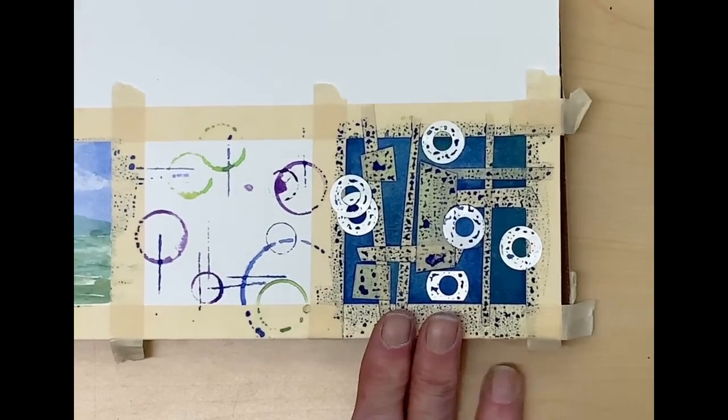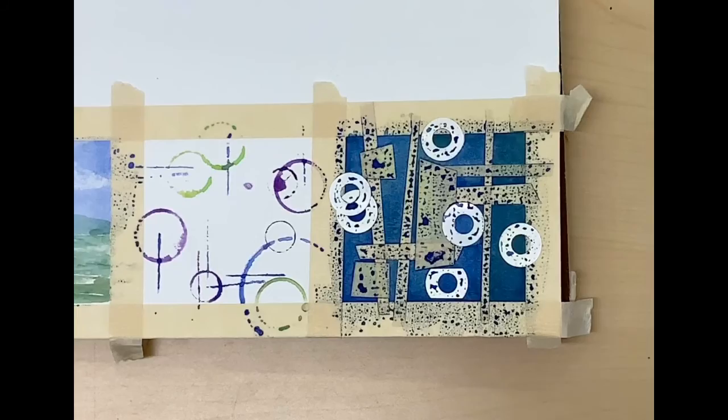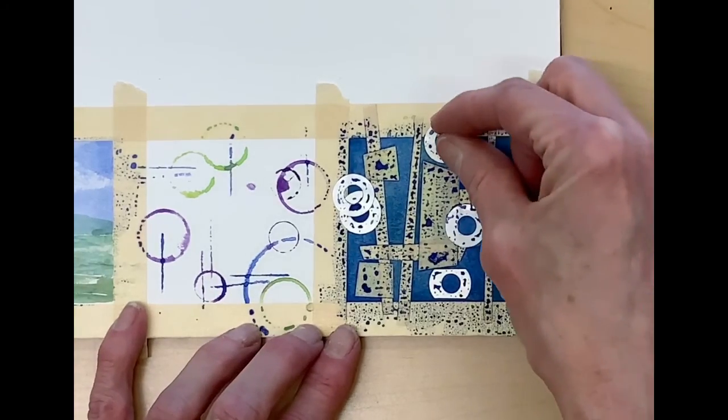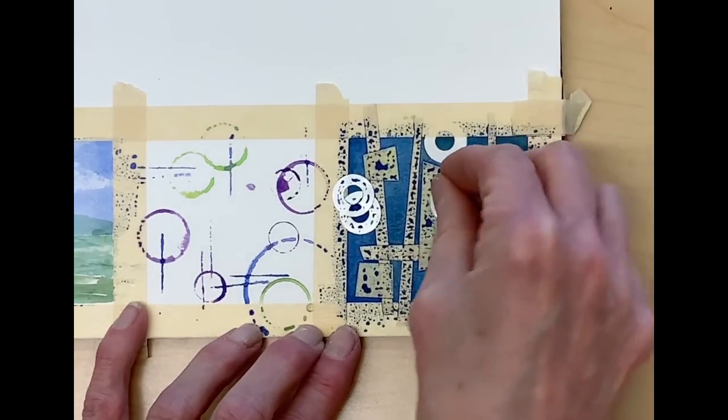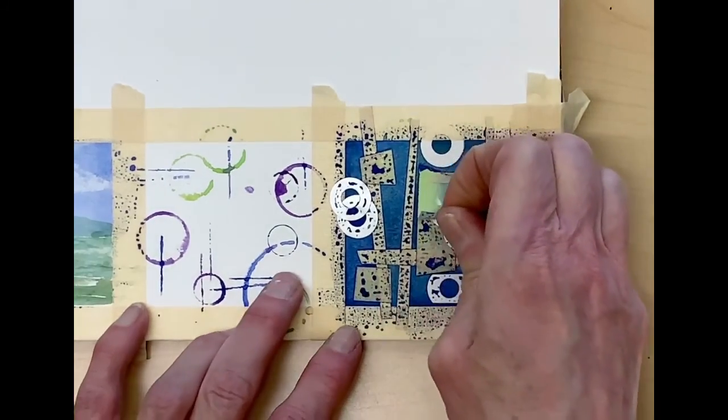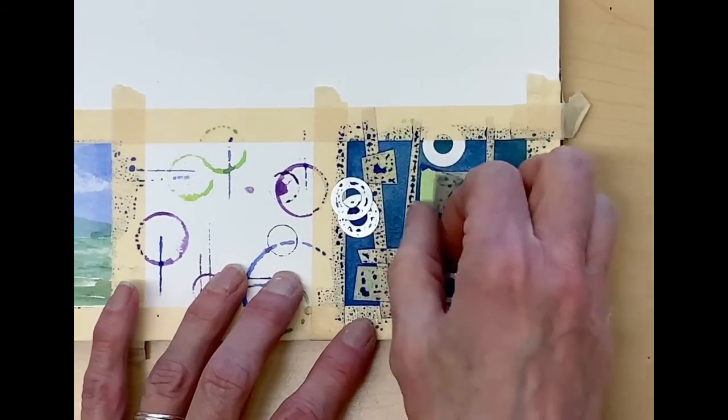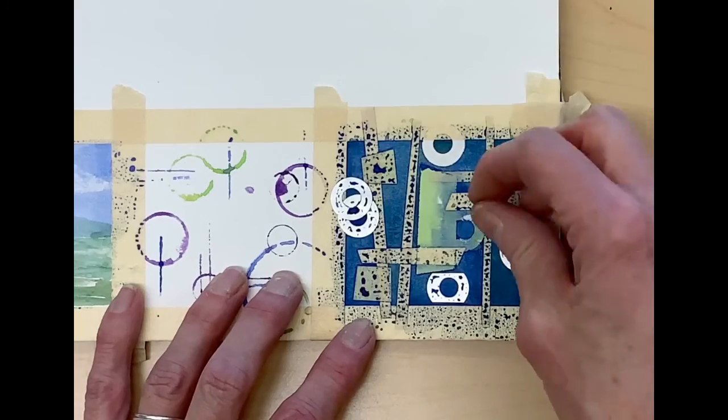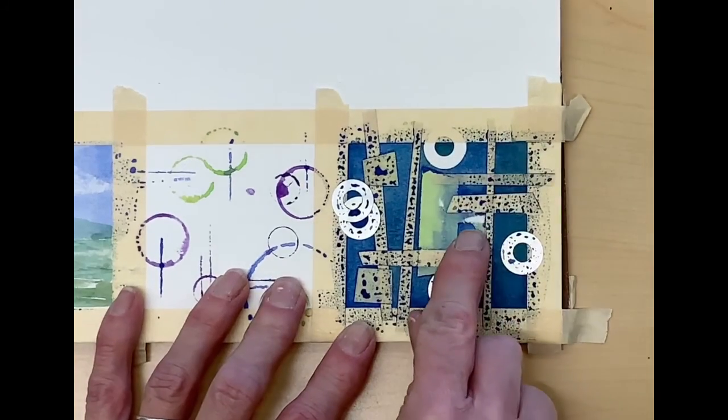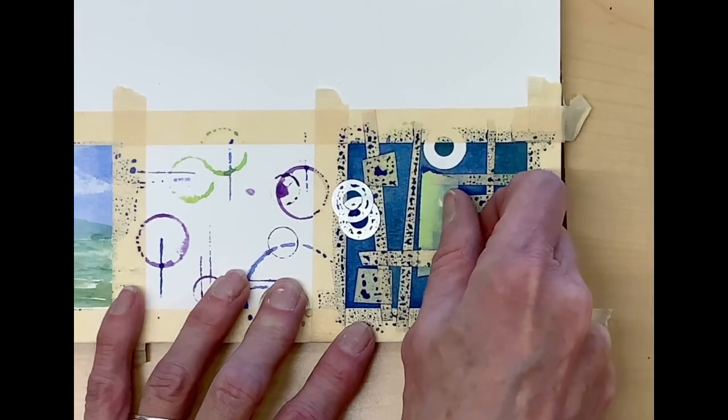All right, I've let it dry for a couple of hours and I'm going to start peeling the pieces off. It's important that you work slowly. You can see here I got some tear off because I wasn't patient, so take your time.